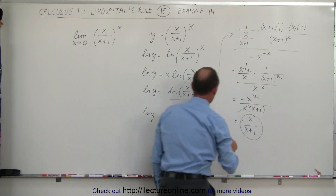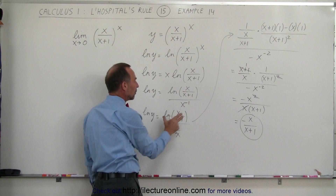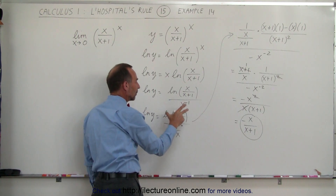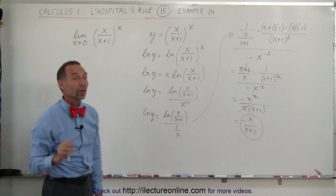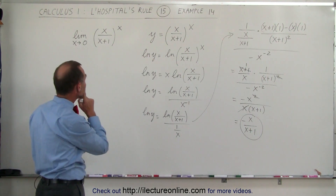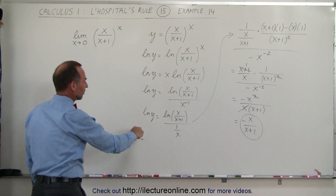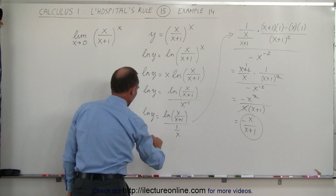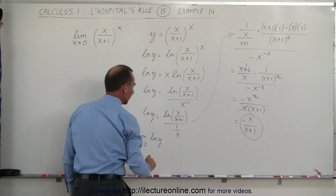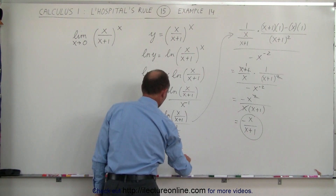This is the function of the natural log of y. When we take the derivative of the numerator and the derivative of the denominator, we get this result. We can now say that the limit as x approaches 0 of the natural log of y is equal to negative x over x plus 1.